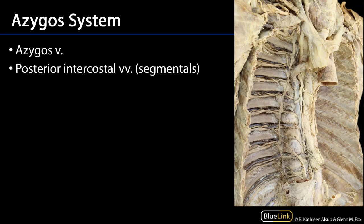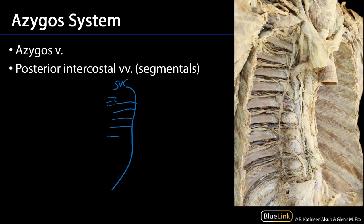The azygos system is a series of unpaired veins. The azygos vein drains into the superior vena cava, and that azygos vein is going to drain intercostal spaces 2 through 11 on the right side, as well as the subcostal vein and the ascending lumbar vein.